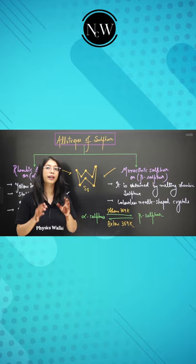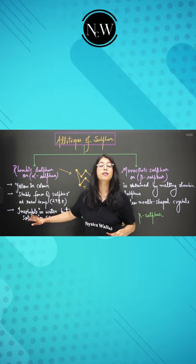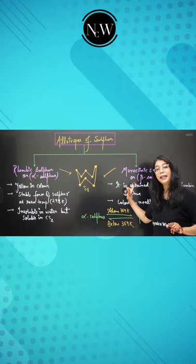Rhombic sulfur is yellow in color, stable at room temperature, and insoluble in water but soluble in carbon disulfide. Monoclinic sulfur is a colorless needle-shaped crystal.